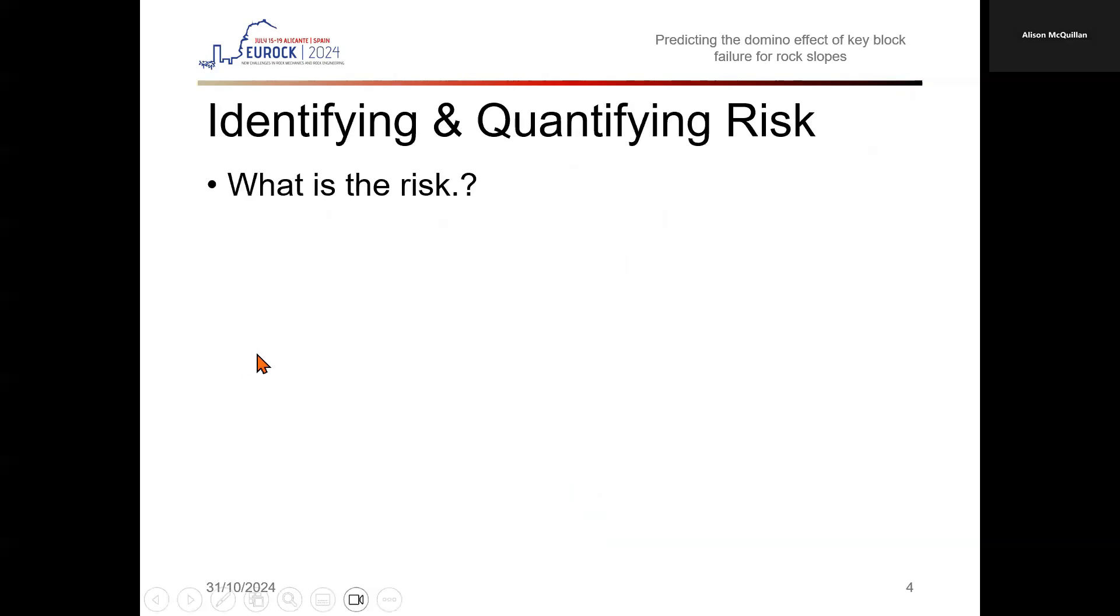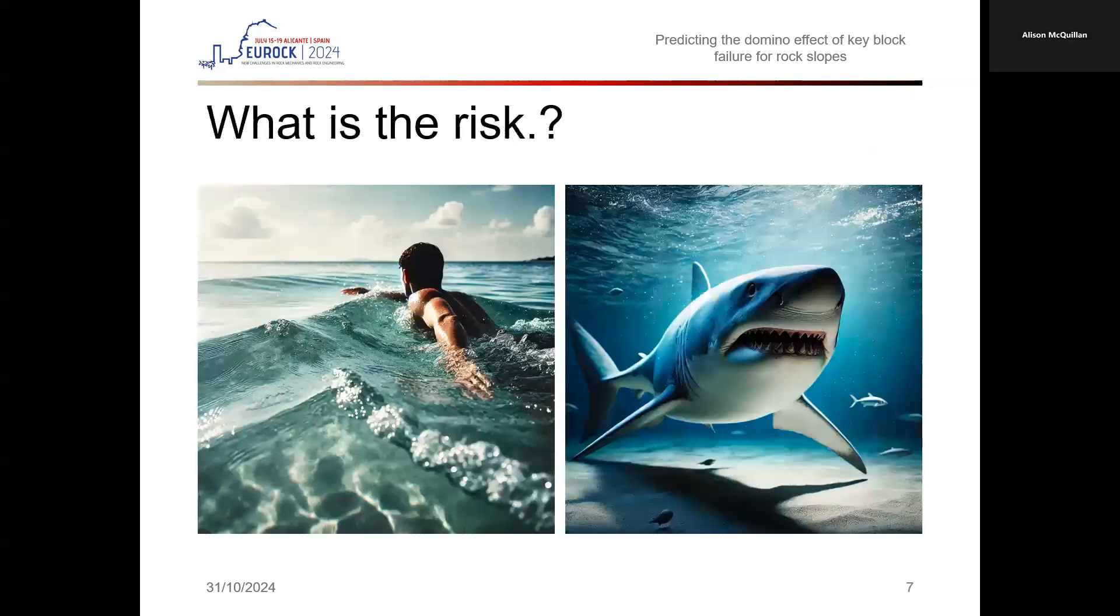First, I want to pose a question about identifying and quantifying risk from a non-geotechnical context before I focus on rock mechanics. The scenario is there's a swimmer or a surfer in the ocean and a great white shark is also swimming in the ocean. What is the risk?